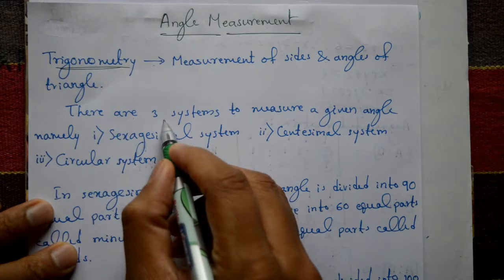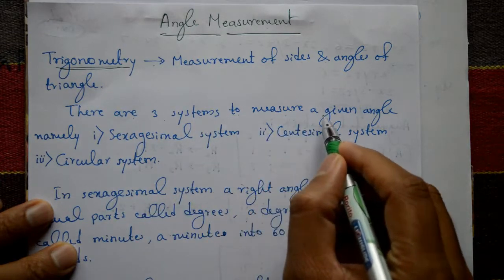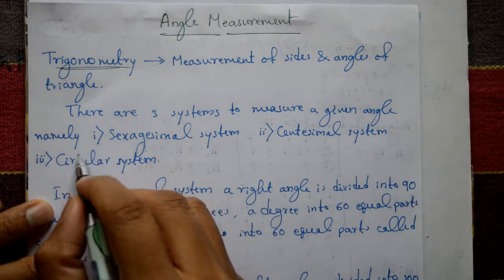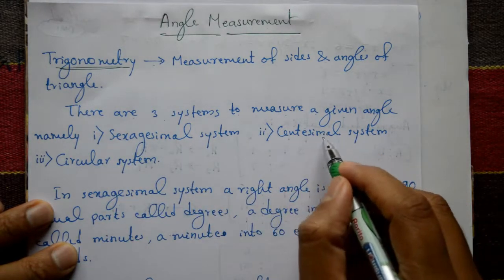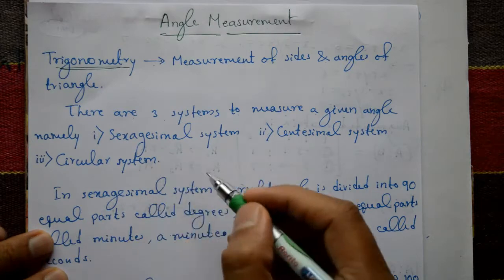There are three systems to measure a given angle: sexasimal system, centisimal system, and circular system.